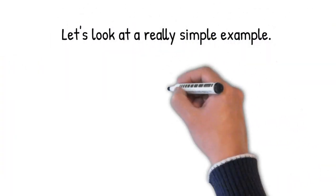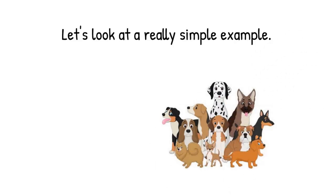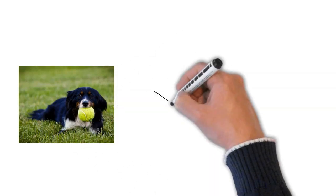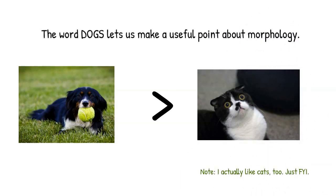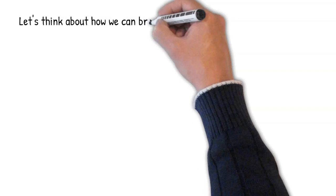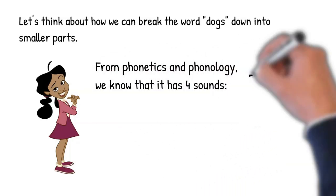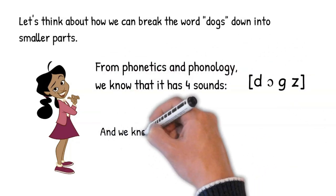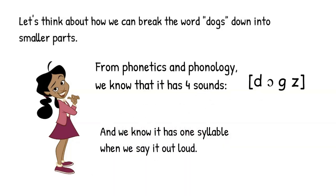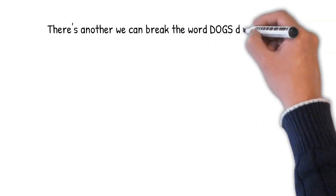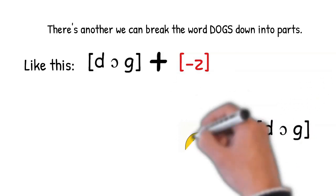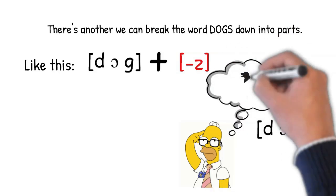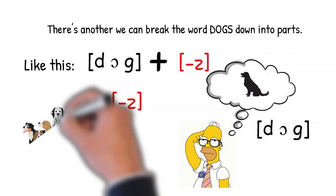Let's look at a really simple example. One of my favorite words. Dogs. Besides being cooler than cats, we can use the word dogs to make a point about morphology here. So let's think about how we can break the word dogs down into smaller pieces. We know from what we did in phonetics and phonology that the word dogs has four sounds. And we also know that it has one syllable when we pronounce it. We don't say dog-guz, we say dogs. But there's still another way we can break the word dogs down into parts. We have two parts with one part, dog, which means whatever dog means in our brains. And another part, zzz, which means plural.